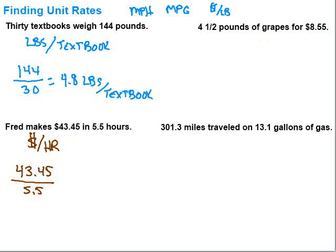Do that division and we can figure out how much Fred's getting paid per hour. So, do that division and we end up with 7.9. When we're dealing with money, remember that we want two decimal places. So Fred gets paid $7.90 per hour. That was our unit rate — that's how we set it up.